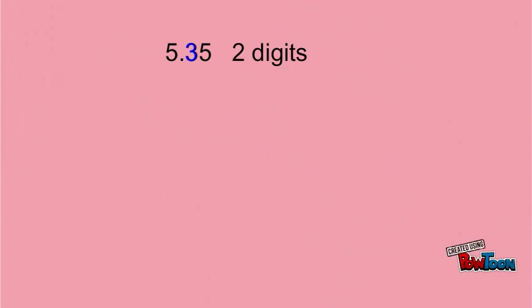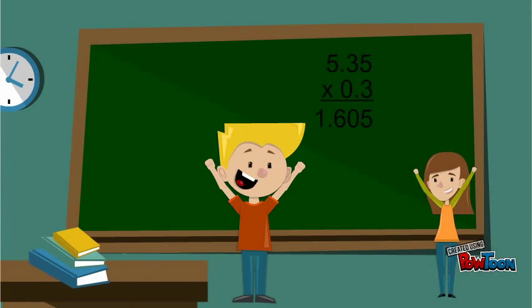5.35 has 2 digits to the right of the decimal point, and 0.3 has 1. So I will need a total of 3 decimal digits in my answer, which would make it 1.605. That's right.